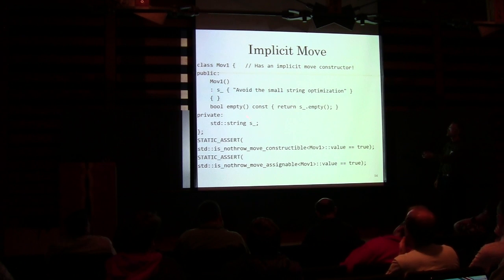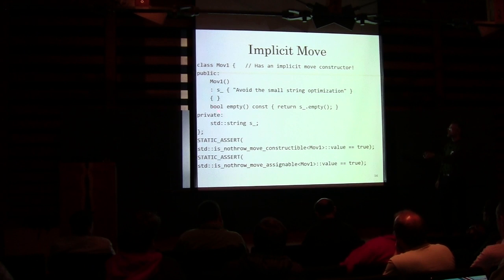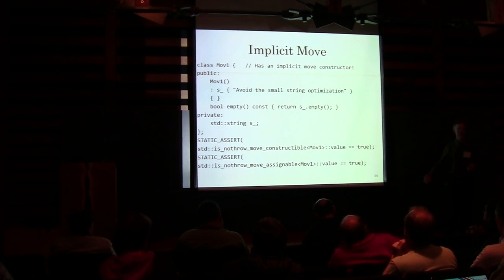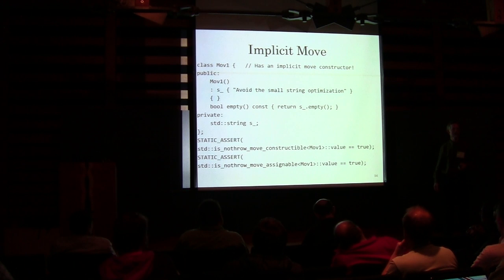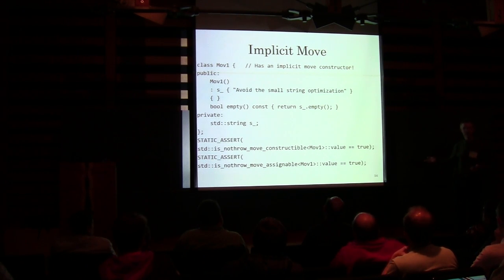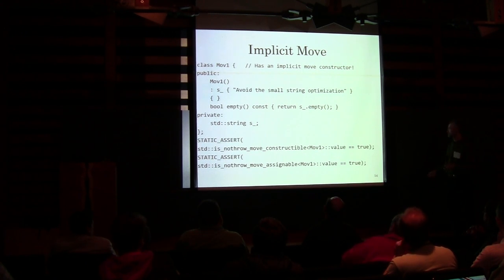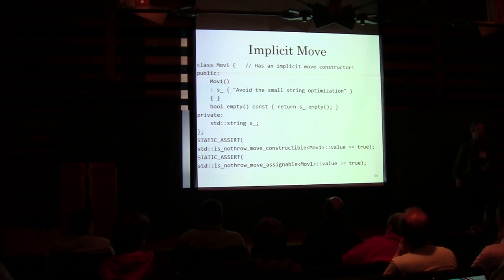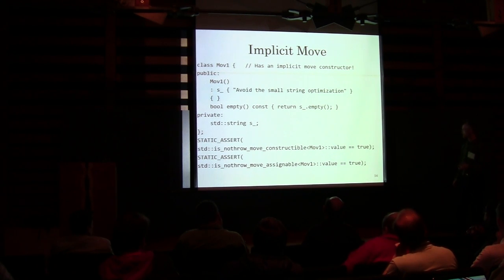Here we've got a class with a default constructor and nothing else. Do I have an assignment operator? In C++98, yes. There's also a move constructor and move assignment generated — because we can do a static assert: is it nothrow move constructible? That's true. The compiler built those things for you. They're invisible — not in the source code — but they're present.